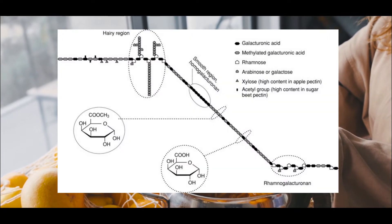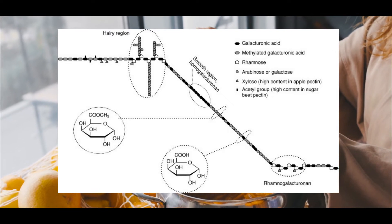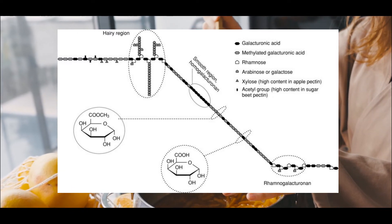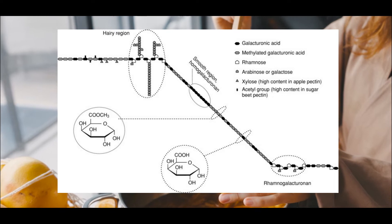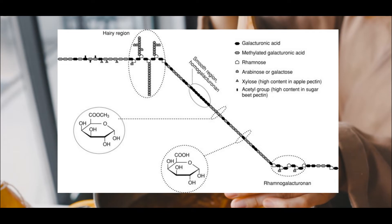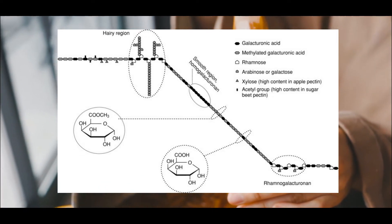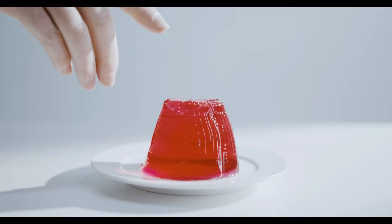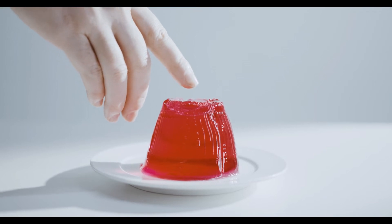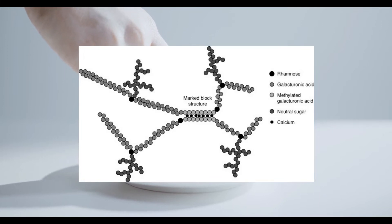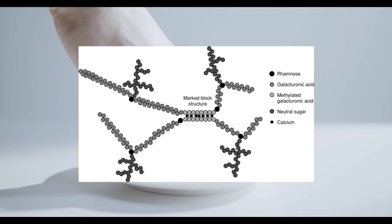Along with galacturonic acid, pectin contains other sugars that are largely neutral. These include things like galactose, rhamnose, arabinose, and xylose. Most of these are not very important — they largely contribute structure rather than function. The exception worth pointing out is rhamnose. It is one of the major things that allows the pectin to have a kink in it, which changes the direction of the chain and contributes significantly to that gelling and final more solid product.